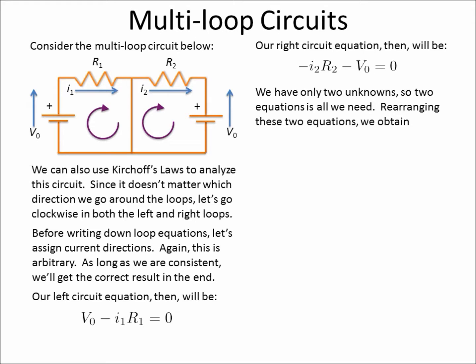So we can rearrange the equations. And the first equation over here is I1 equals V-naught over R1. And the second equation is going to give us I2 equals negative V-naught over R2.